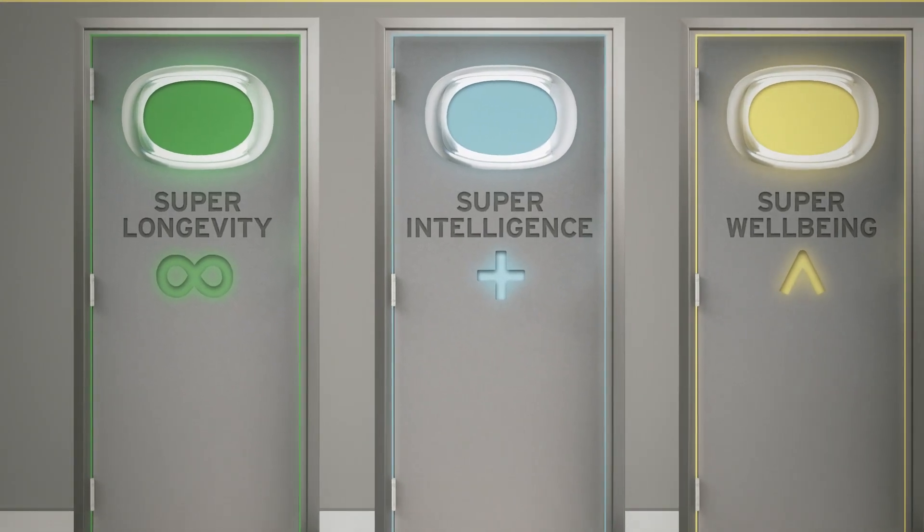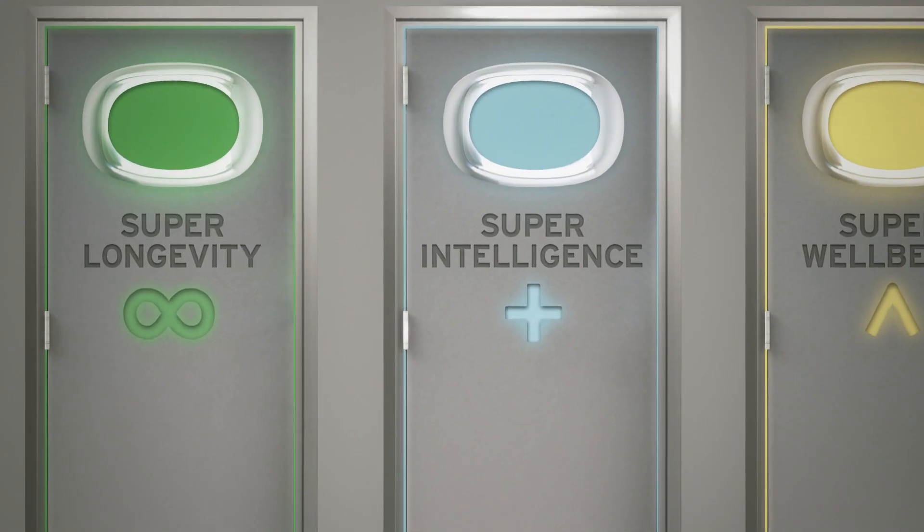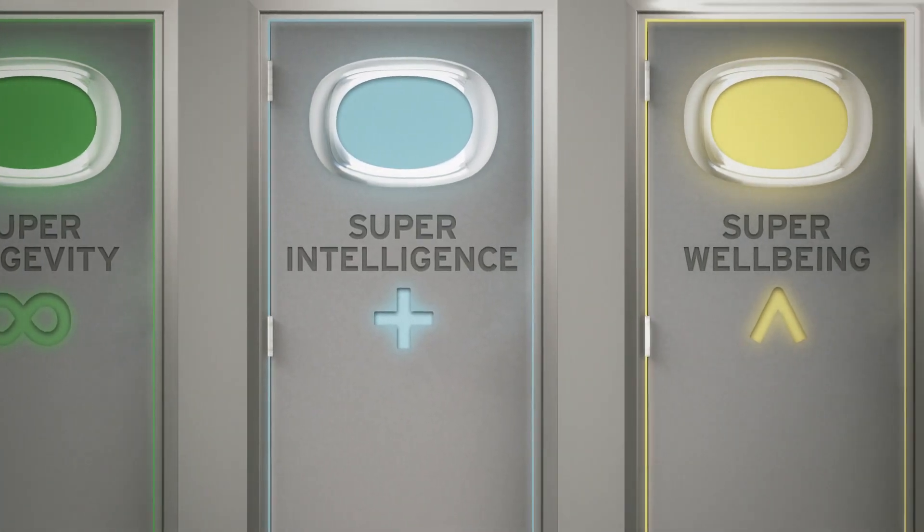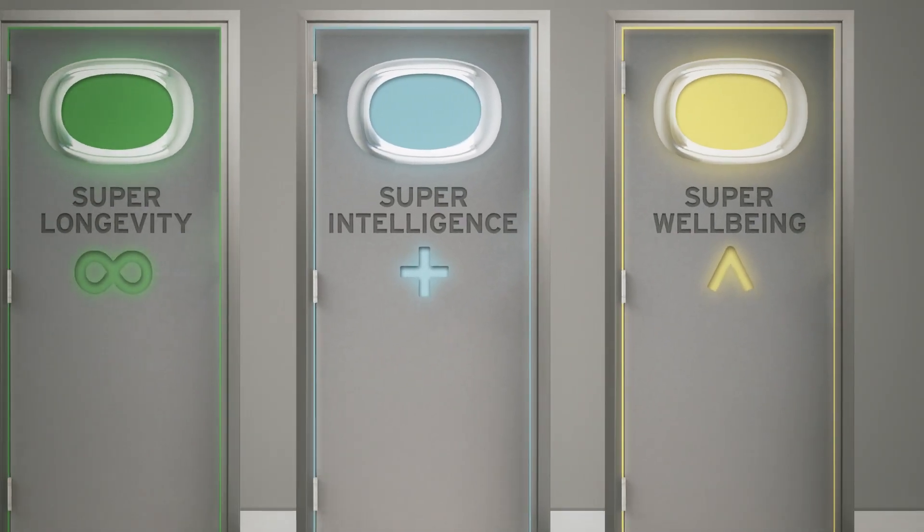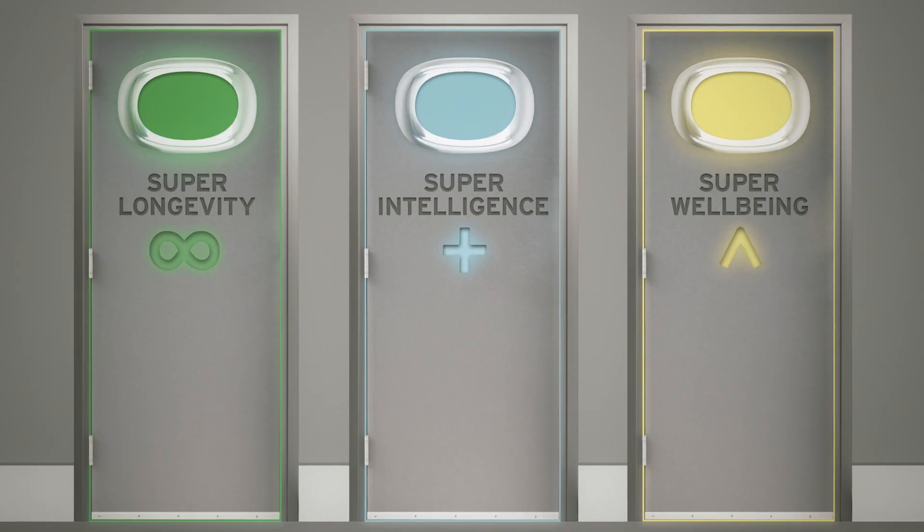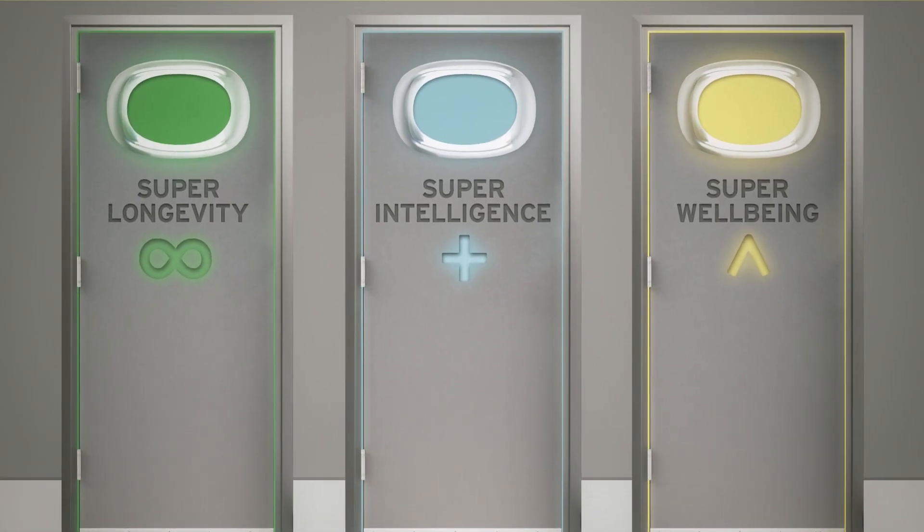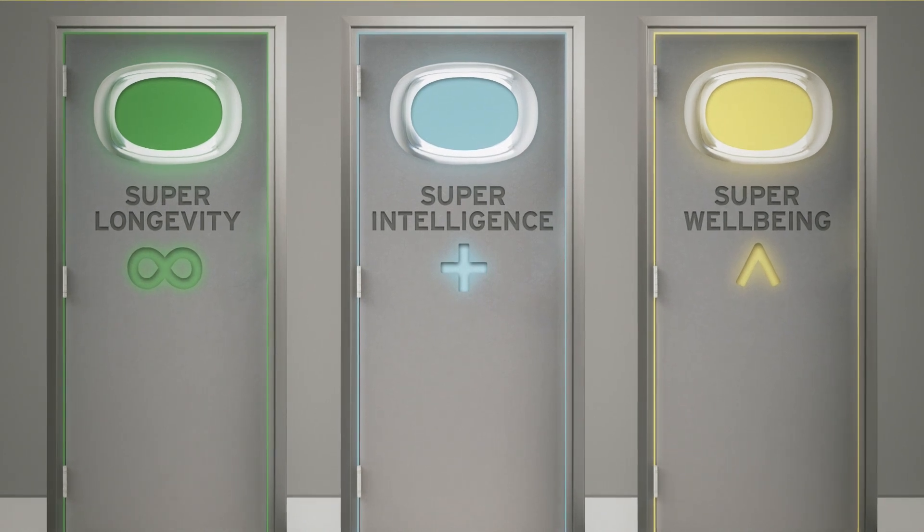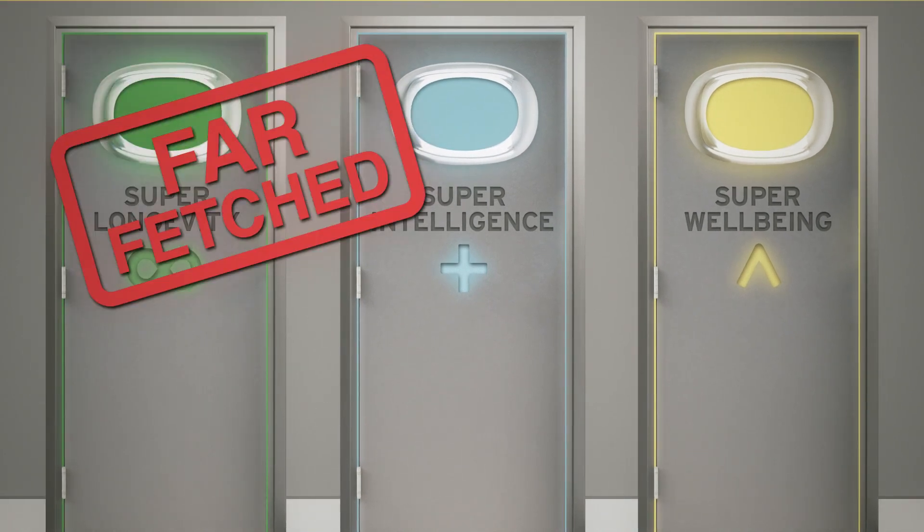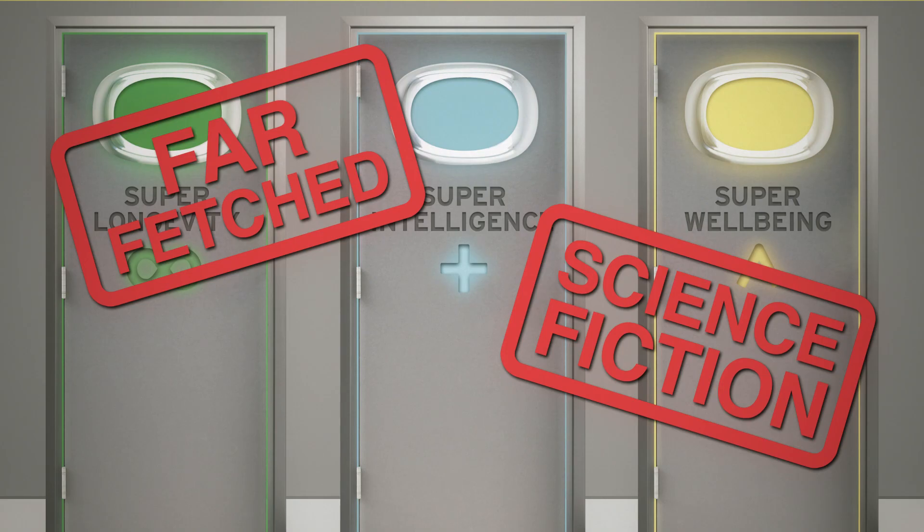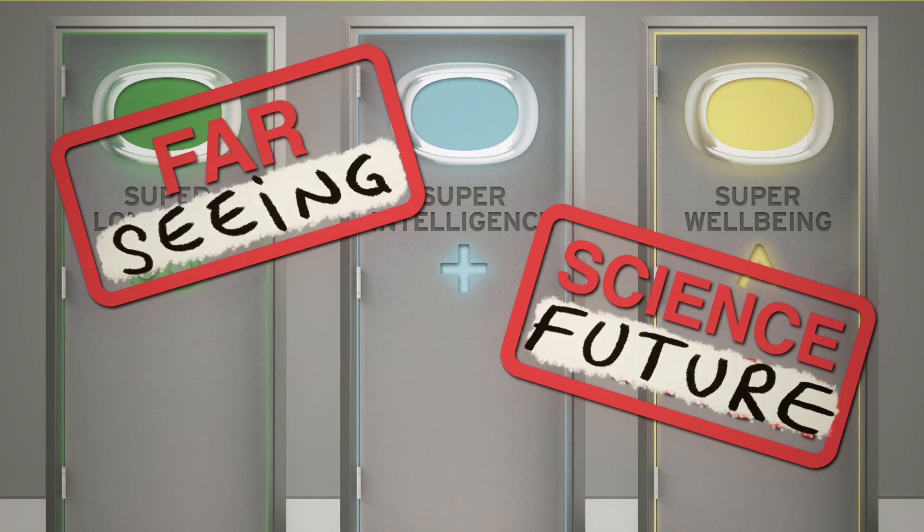The three supers, super longevity, super intelligence and super wellbeing, might radically change human history if, or when, they are realized. One of the main issues facing transhumanist ideals is that they are seen as far-fetched, or perceived as just science fiction. But this is a big mistake.